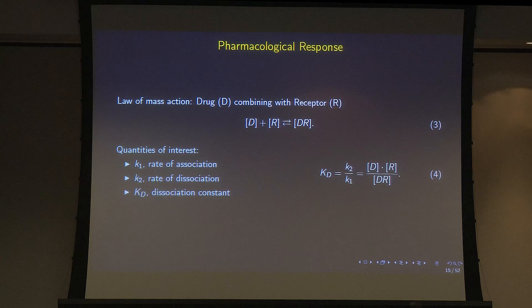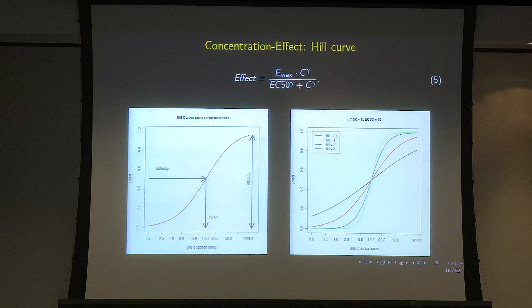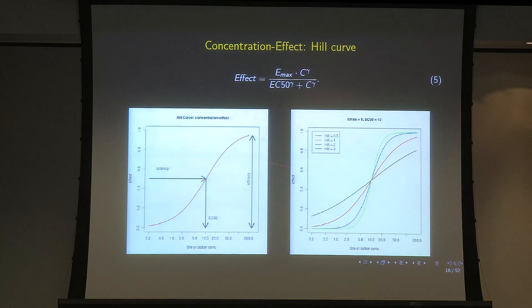Pharmacodynamics is all about the law of mass action — the drug in equilibrium with the receptor causing a pharmacological effect. From the law of mass action you can derive the Emax model, the Hill curve. The effect equals Emax multiplied by concentration divided by EC50 plus concentration. Plotting site-of-action concentration versus effect gives an S-shaped curve, which becomes more S-shaped the higher the Hill coefficient gamma. The EC50 gives the concentration required to produce half the maximum effect.